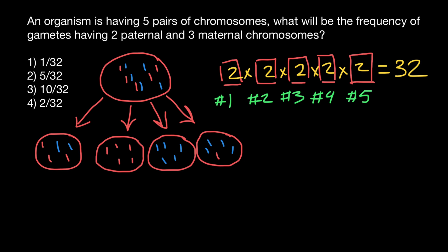How many different combinations of gametes may we have? We just have to multiply all these probabilities, and we get 32 combinations. Now I want to show a common mistake — the person who sent me this question made this mistake, and then I will show the correct solution. This person proposed that the first chromosome would be paternally inherited, the second also paternally inherited, and the third maternally inherited — each time the probability would be one-half. So we multiply one-half × one-half × one-half × one-half × one-half, and the answer should be 1/32.